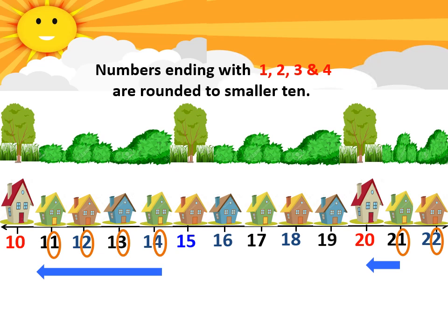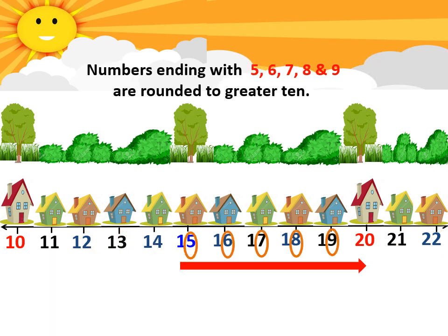Recap: Numbers ending with 1, 2, 3, and 4 are rounded off to the nearest lower 10. In this case, numbers 11, 12, 13, and 14 were rounded off to 10, and numbers 21 and 22 will be rounded off to 20. Numbers ending with 5, 6, 7, 8, and 9 are closer to the higher 10, so they are rounded off to 20, which is the greater of the two 10s.